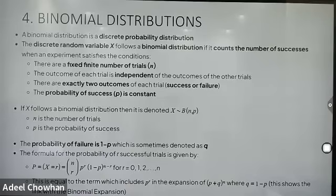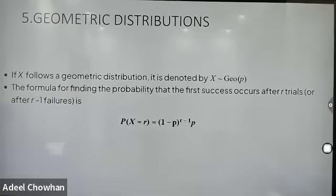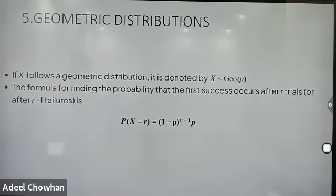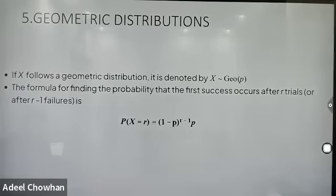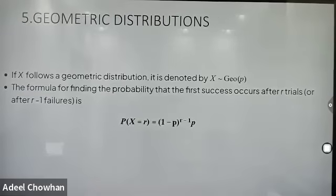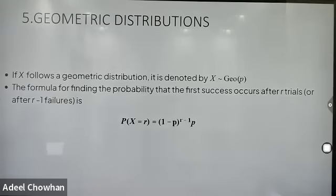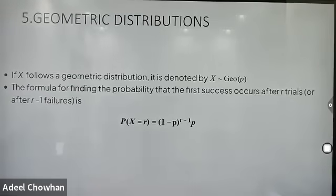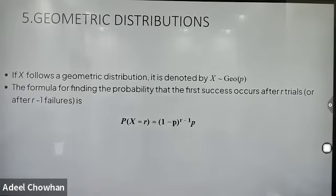n is the total number of trials and r is the required number of trials. Then we have geometric distribution. This is the kind of distribution in which the first-time success occurs. Its parameters are: P(X = r) = (1−p)^(r−1) × p, which is q^(r−1) × p. We use this geometric distribution when we want to find when the first success in any event will occur.